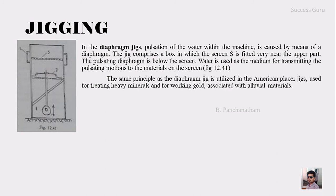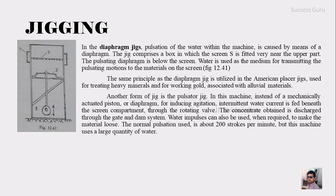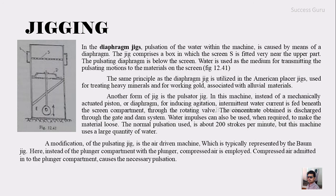The same principle as the diaphragm jig is utilized in American placer jigs, used for treating heavy minerals and for working gold associated with alluvial material. Another form is the pulsator jig, where instead of a mechanically activated piston or diaphragm for inducing agitation, an intermittent water current is fed beneath the screen compartment through a rotating valve. The concentrate obtained is discharged through a gate and dump system. Water impulses can also be used when required to loosen the material. The normal pulsation used is about 200 strokes per minute, but the machine uses a large quantity of water.